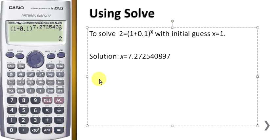So when x is equal to 7.272540897, then 1 plus 0.1 to the power of x will equal 2. Thank you.